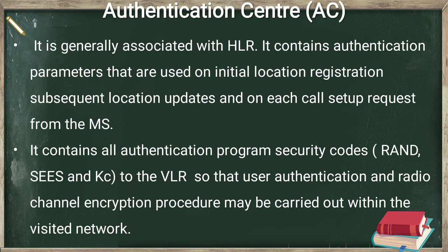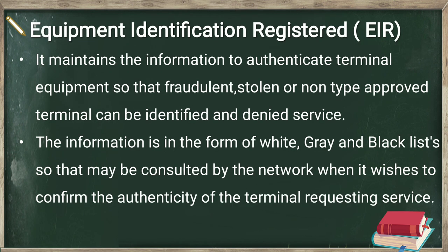The Authentication Center, AC, is generally associated with the HLR. It contains authentication parameters based on initial location registration, subsequent location updates, and each call setup request from the mobile station. It contains all authentication program security codes: the random number, SRES — signed response — and Kc — the cipher key supplied to the VLR. With the help of these codes, the MSC grants authentication for the subscriber to operate in that radio coverage area.